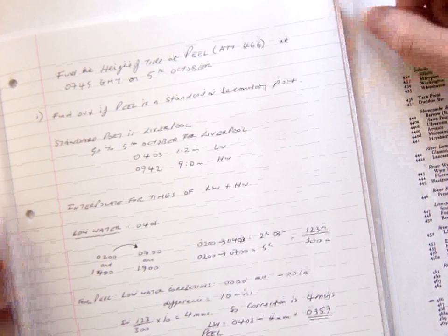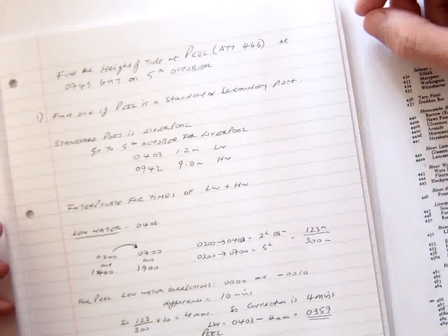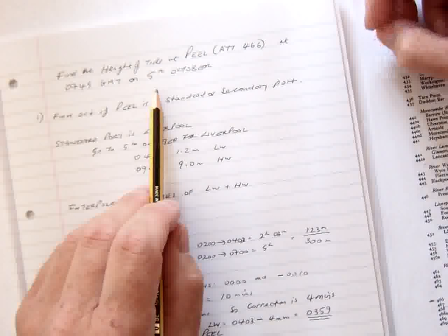Okay, the problem we're going to look at here is when we need to calculate the height of tide at Peel, 0745 GMT, 5th of October.